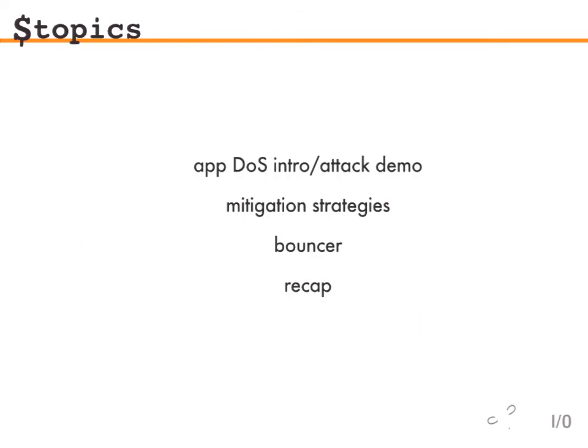So what are we going to talk about? We're going to do a quick intro to app denial of service, a quick attack demo, move on to some mitigation strategies — what you can do to help prevent or mitigate these — talk about Bouncer, which is a small framework I've written to help defend against these attacks, and then a recap.